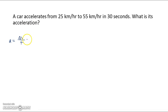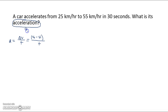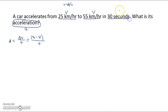To get the change in velocity, you have to take the final velocity and subtract the initial velocity from it, and then you have time. So to do this, we have to analyze our question. We are looking for the acceleration of the car, so we're looking for A. We know that it's going to accelerate from 25 kilometers per hour — kilometers over hours gives us speed or velocity. So this is a velocity, and then we have 55 kilometers per hour, which is another velocity, and this is going to happen in 30 seconds, which is our time.